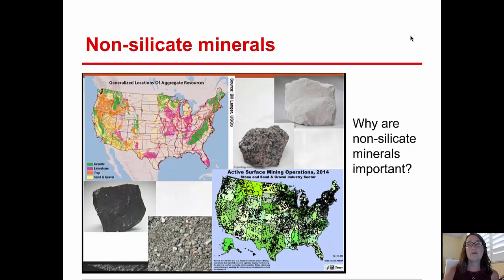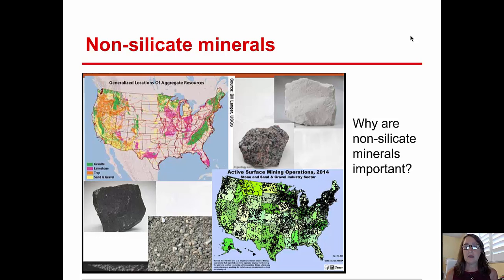Non-silicate minerals are very important in terms of industry. Here you see a couple of maps. The map in the top left corner lists locations where aggregates are resourced. The areas in green indicate where granite is extracted in the United States, the areas in fuchsia indicate where limestone is extracted, and the yellow areas show sand and gravel deposits. In the bottom right, you see active surface mining operations from 2014 for stone, sand, and gravel for the industrial sector. These are minerals and resources used in industry, infrastructure, and building — typically non-silicates, but very important economically.